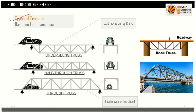For ILD, we should consider the type of trusses based on the load transmission. Essentially there are two types: the deck type truss and the through type truss. In the deck type truss, the load moves on the top chord. In the through type truss, the vehicle load moves inside the truss and acts on the lower deck — that is, the load moves on the bottom chord.